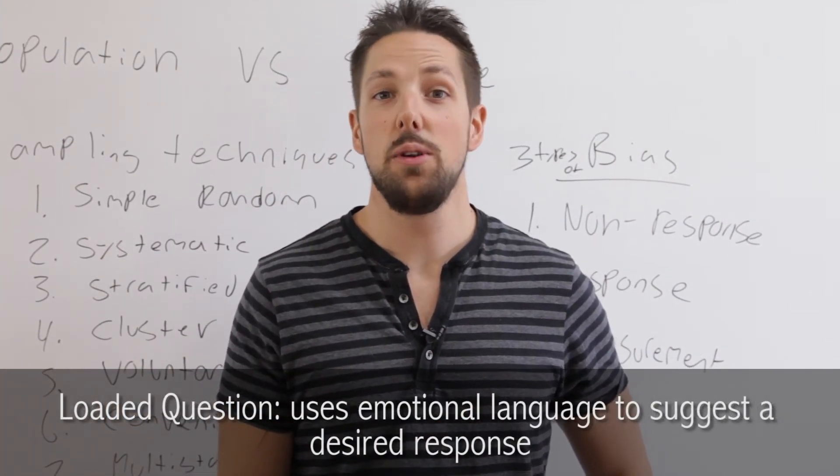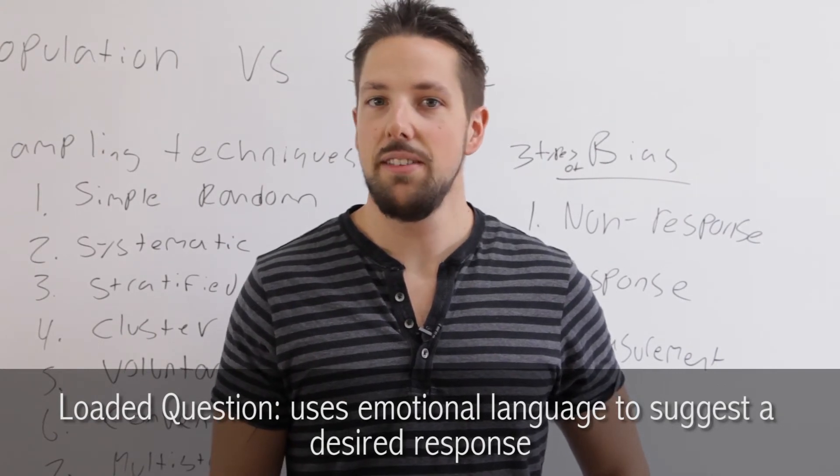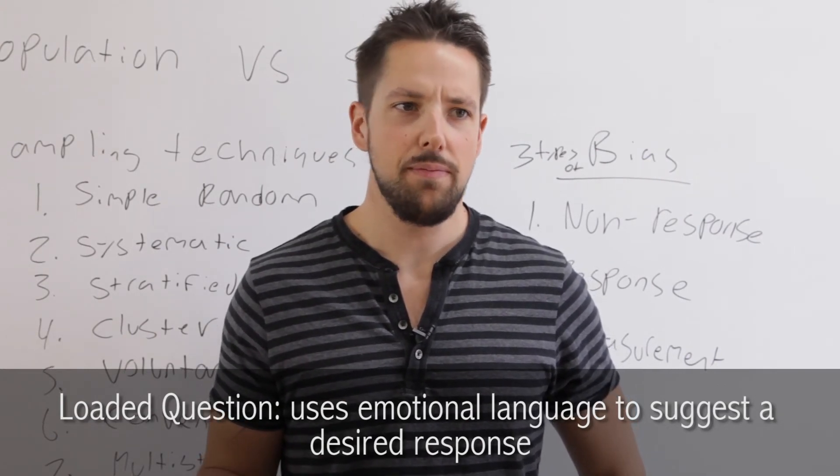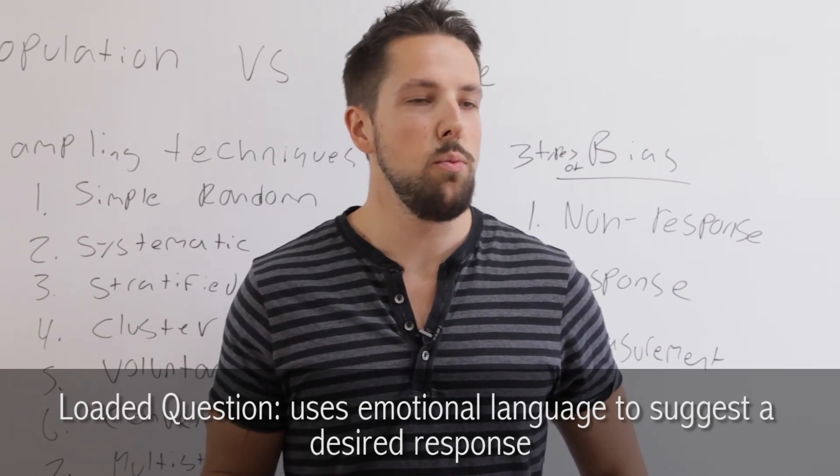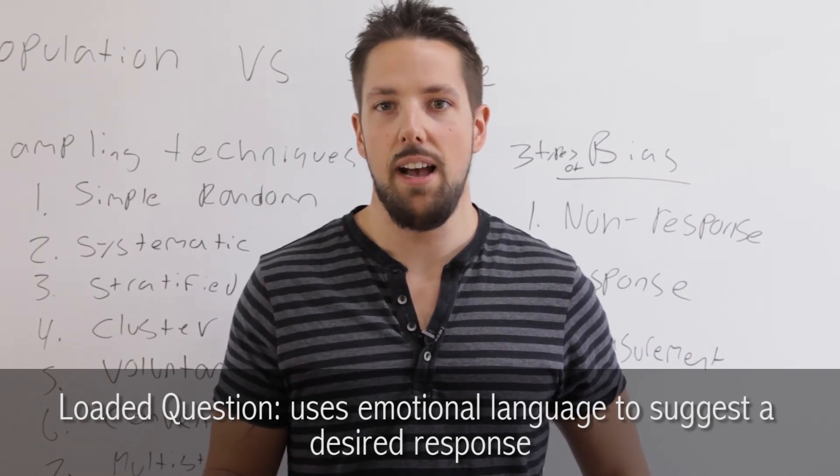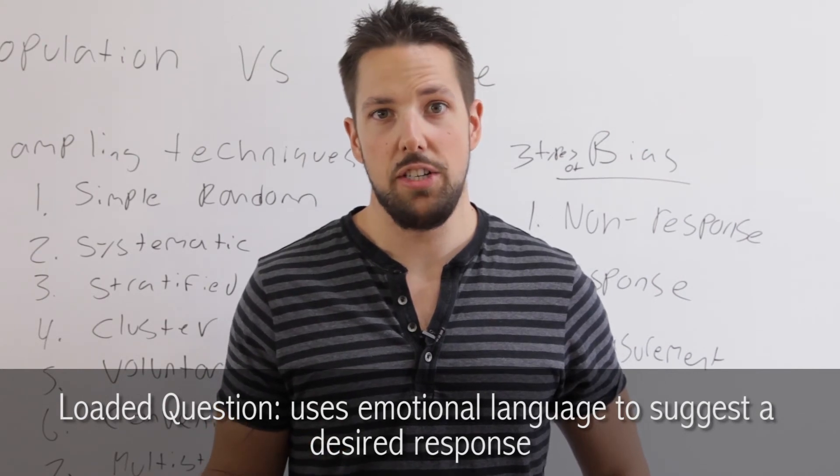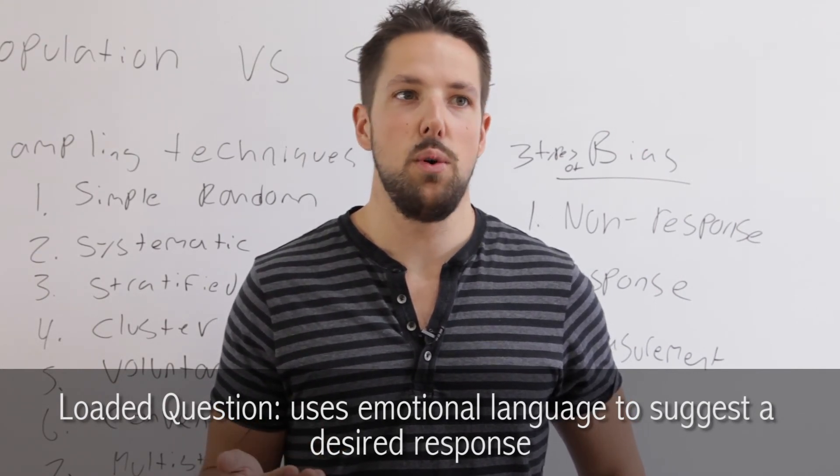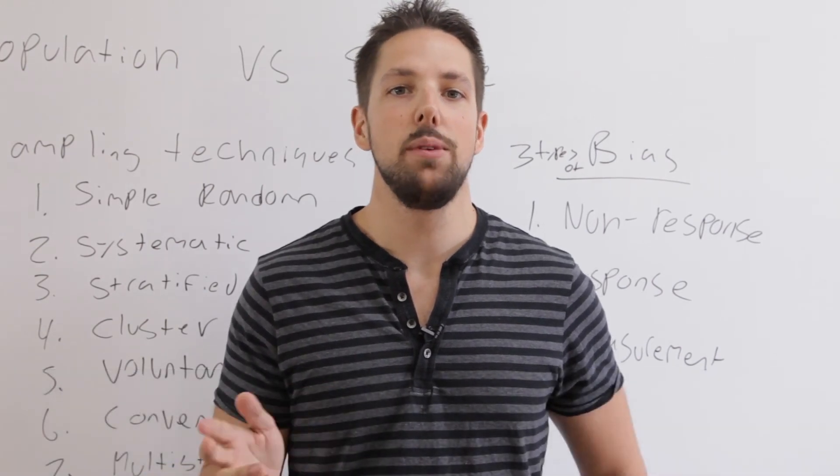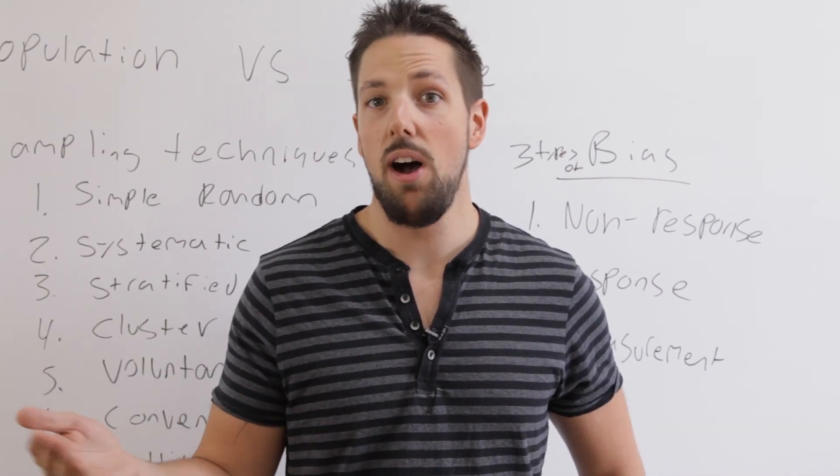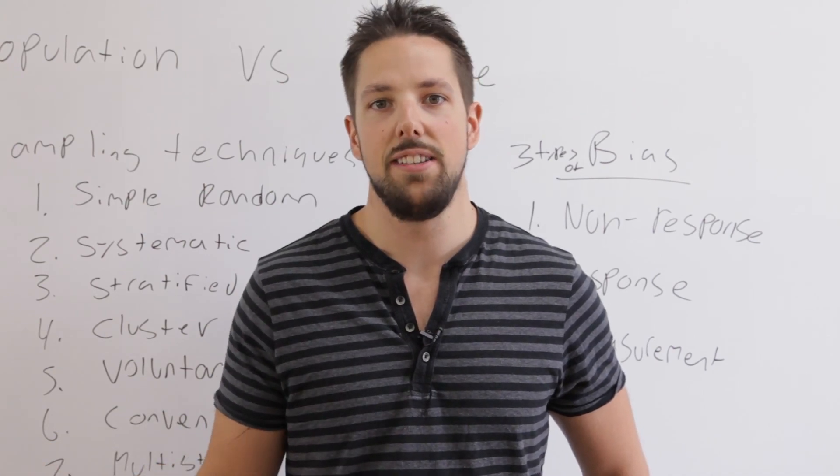Another type of measurement bias is a loaded question. That's when you use specific language to guide your reader to make a specific choice. Let's say the question was whether or not a casino should be open downtown. You phrase the question, do you believe that this forward-thinking, money-making proposition of opening a casino is a good idea? That type of language guides the reader to make a positive answer to the question and biases the results.